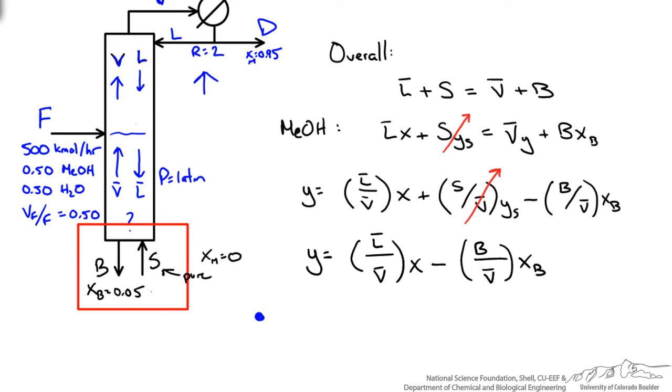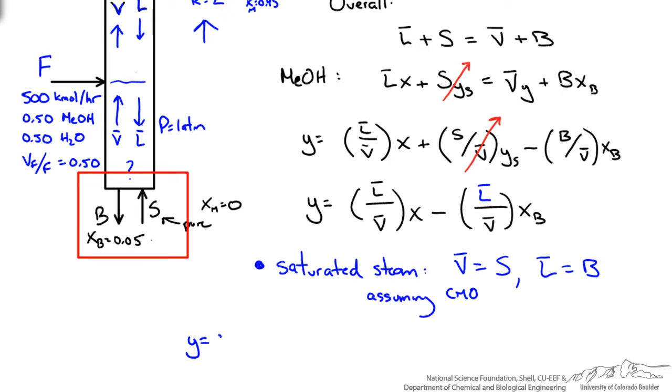A very important thing to note is that if we are using saturated steam then our v is just equal to s, which also means that our L is equal to b. Again we are using the constant molar overflow and saturated steam feed. We can rewrite the operating line equation with our L bar and we can see now that when y is equal to 0 x must be equal to xb or the composition of the bottoms. This is in contradiction to a reboiler in which we are working at y equals x equals xb.